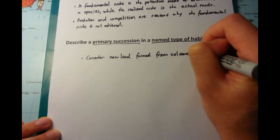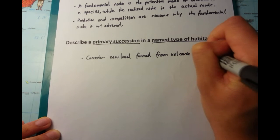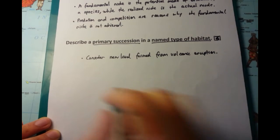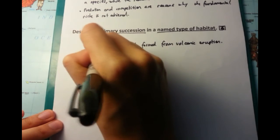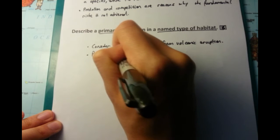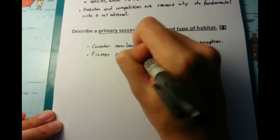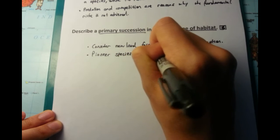Now primary succession, the concept of that is that it's an area or substrate which has never had organisms on there before. This is in comparison to secondary succession, which previously there might have been organisms, fauna and flora, present there, but now has no longer been there. So let's talk about primary succession.